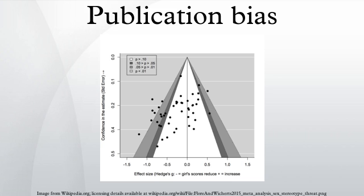Further remedies include considering, before running an experiment, what the chances are that they are testing a true or non-true relationship; properly assessing the false positive report probability based on the statistical power of the test; reconfirming established findings of classic studies using large studies designed with minimal bias.